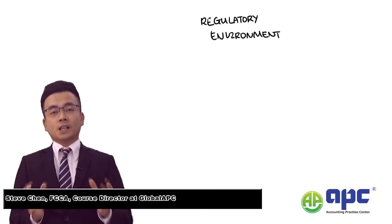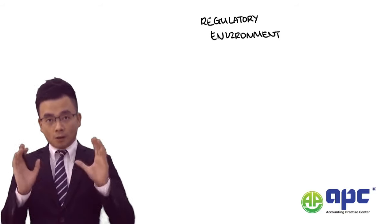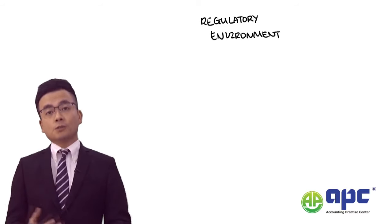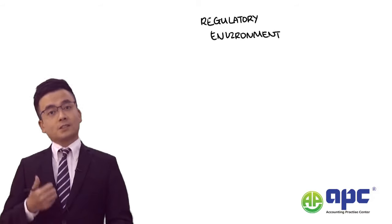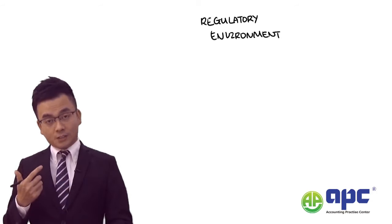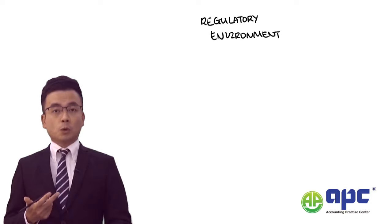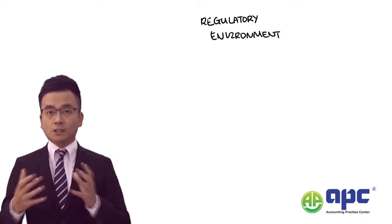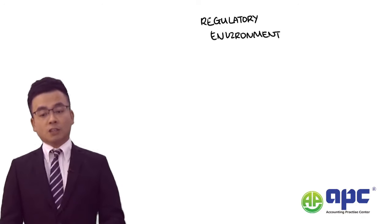Welcome to the summary regarding ISA for the regulatory environment in our syllabus. From the regulatory environment's point of view, we need to fulfil certain regulatory standards — for example, the Companies Act, the Corporate Governance Code, international standards related to IFRS (International Financial Reporting Standards), and also international standards on auditing, including ethical codes. These are the elements within the regulatory environment.